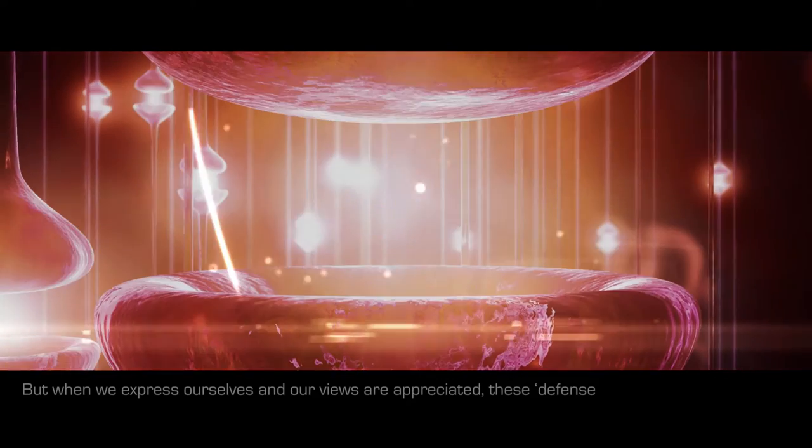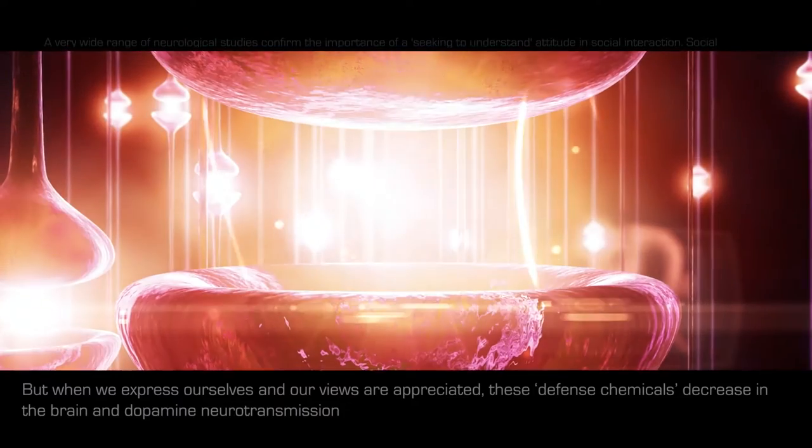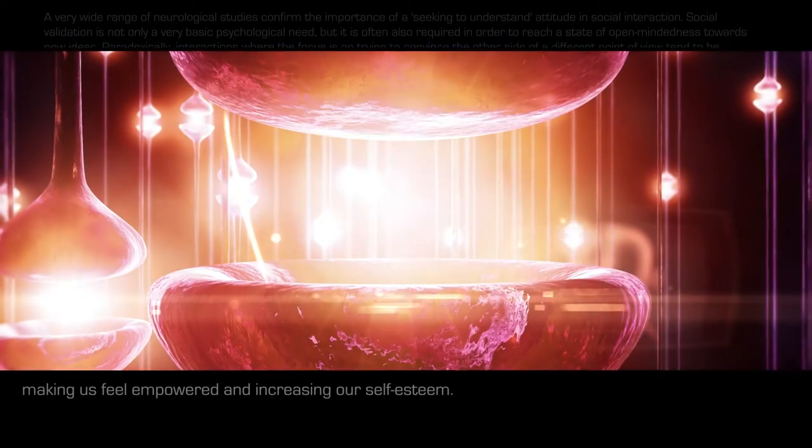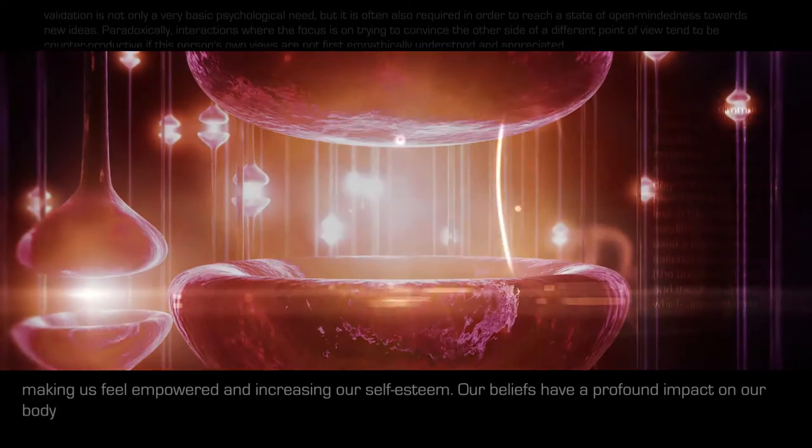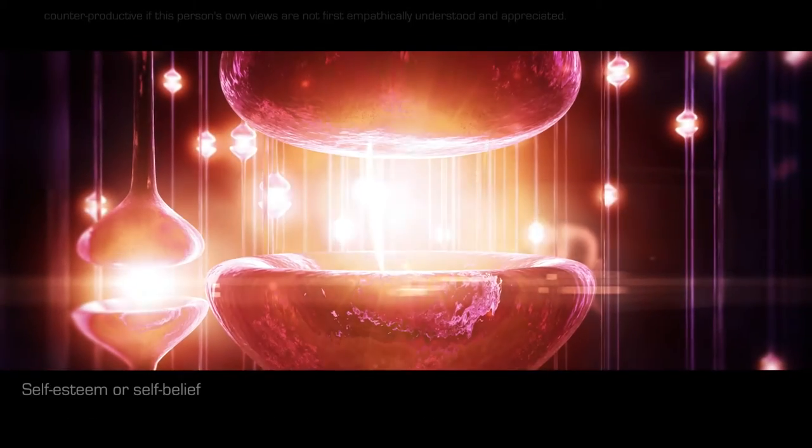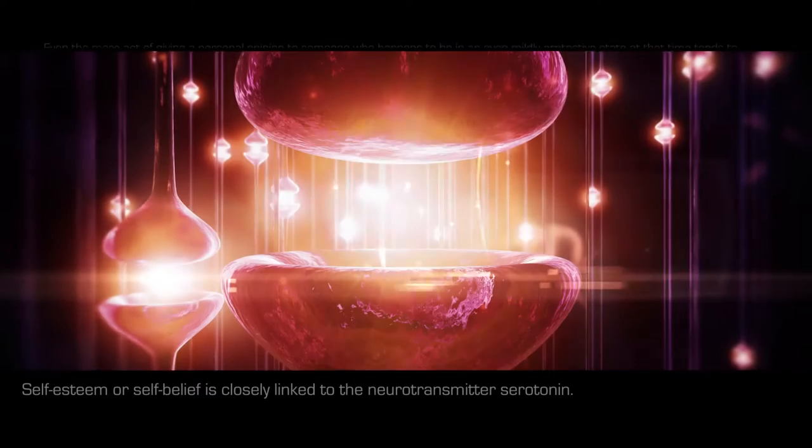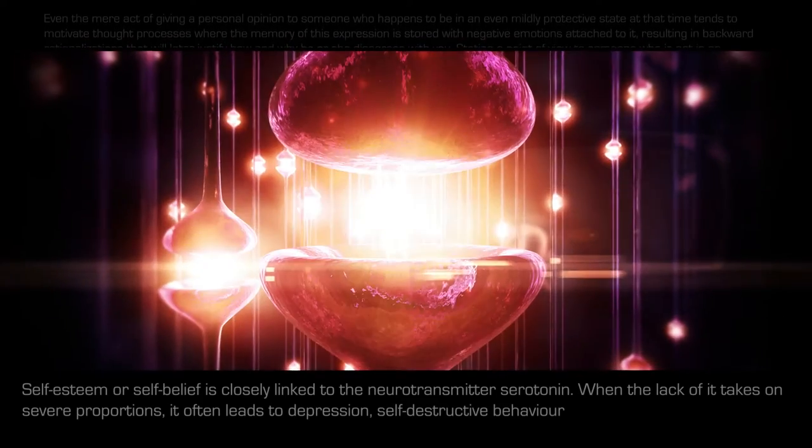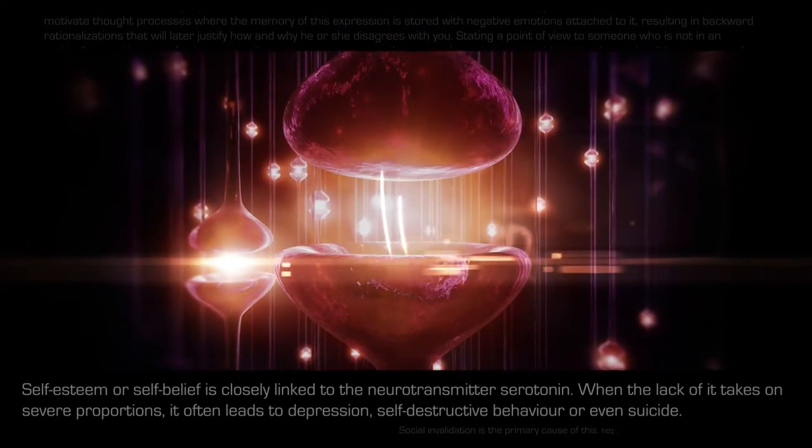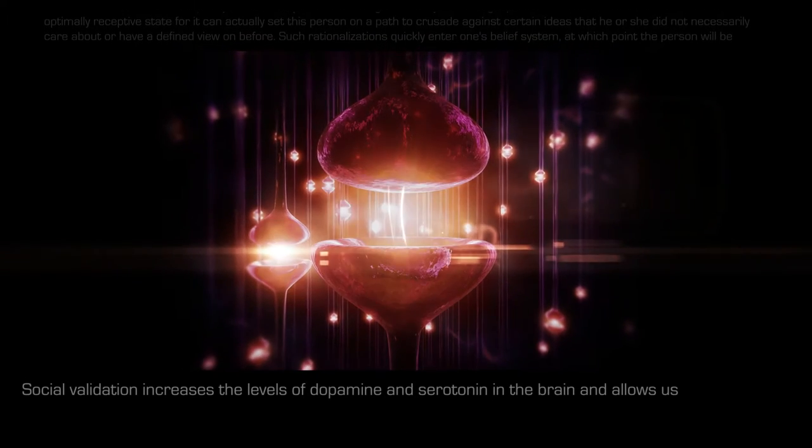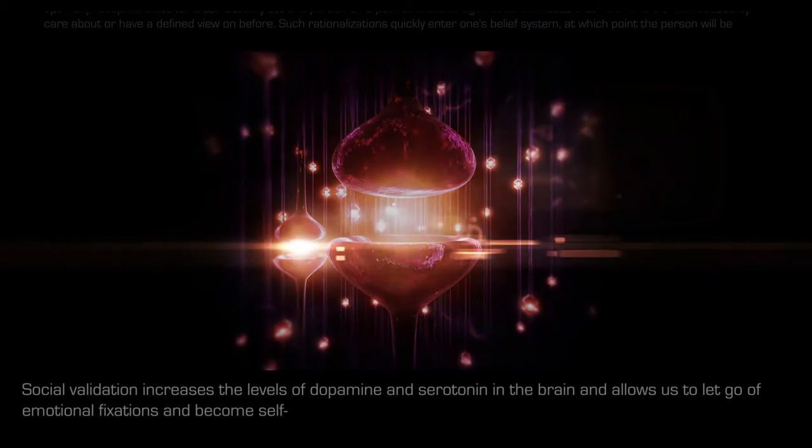But when we express ourselves and our views are appreciated, these defense chemicals decrease in the brain, and dopamine neurotransmission activates the reward neurons, making us feel empowered and increasing our self-esteem. Our beliefs have a profound impact on our body chemistry. This is why placebos can be so effective. Self-esteem or self-belief is closely linked to the neurotransmitter serotonin. When the lack of it takes on severe proportions, it often leads to depression, self-destructive behavior or even suicide. Social validation increases the levels of dopamine and serotonin in the brain and allows us to let go of emotional fixations and become self-aware more easily.